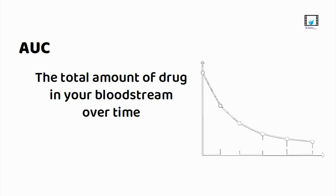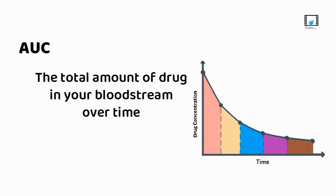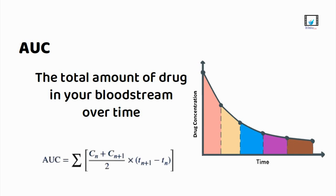In practice, we calculate AUC using the trapezoidal rule. It adds up the areas under the concentration-time curve between each sample, as shown on the screen.